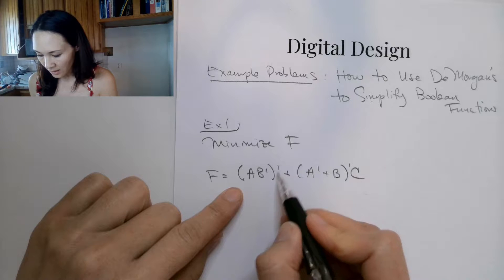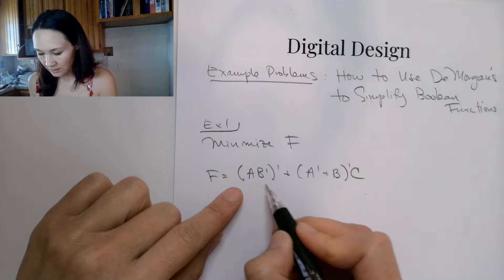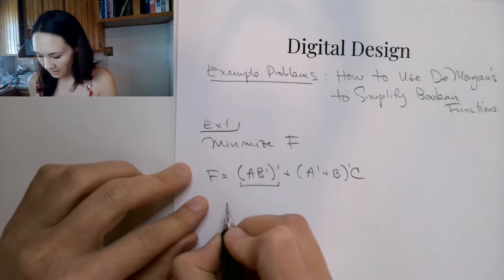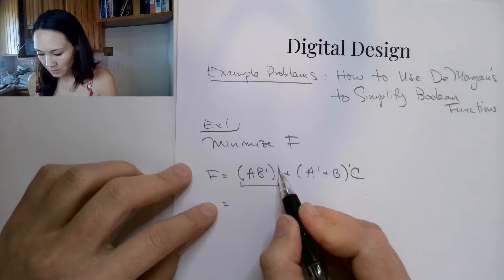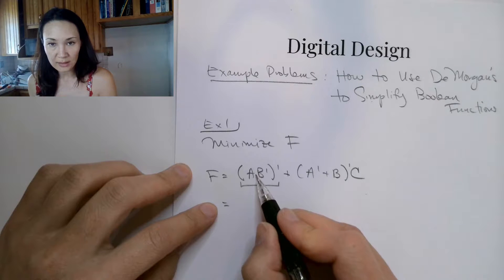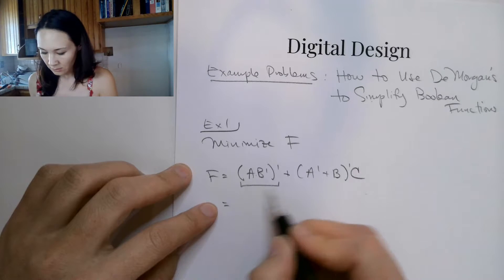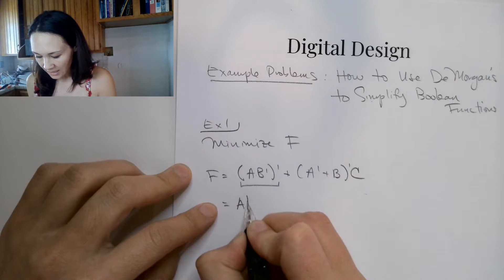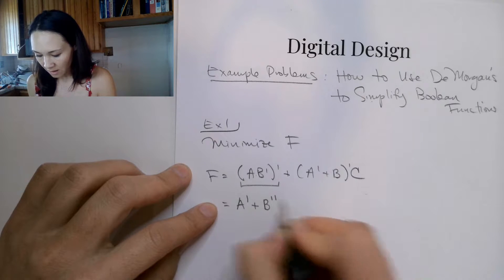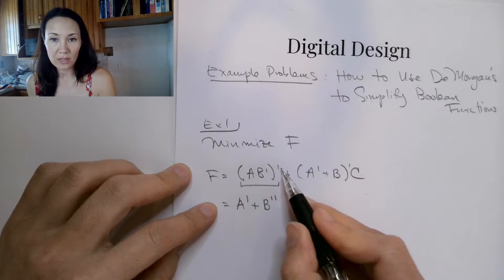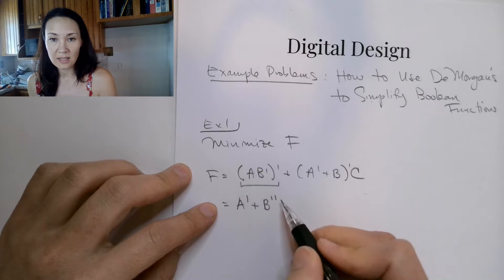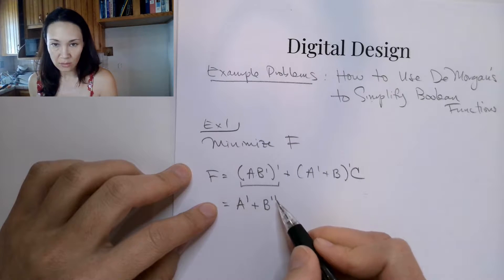First, you see that there's a NOT on the outside of this term in parentheses. So if I apply De Morgan's to this, I'm going to distribute the NOT to the a and the b', and I'm going to change this AND to an OR. So this term becomes a' OR b'', because b is already NOTed, and when I distribute this NOT inside the parentheses, b' gets another NOT.